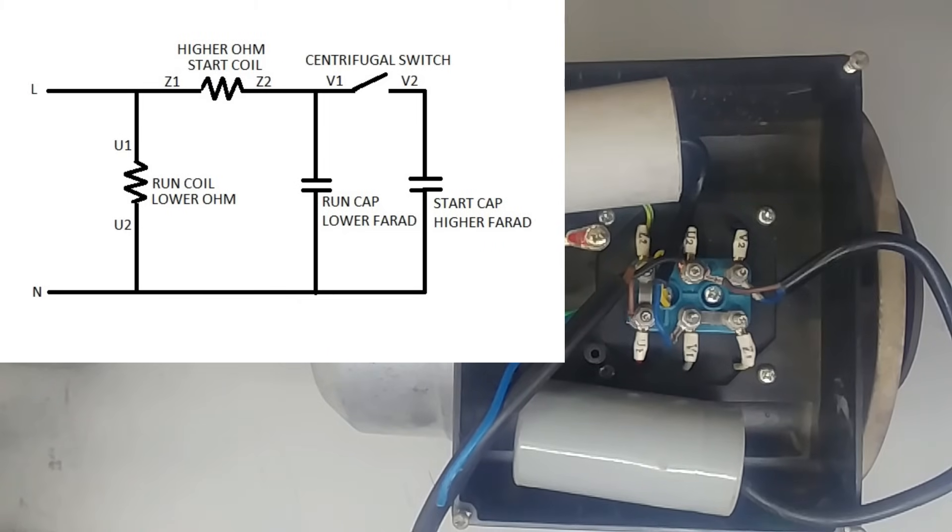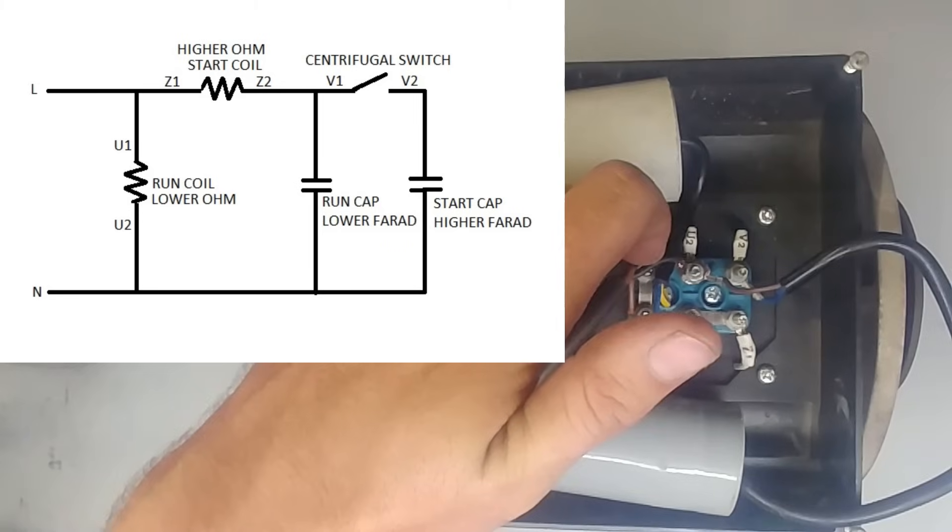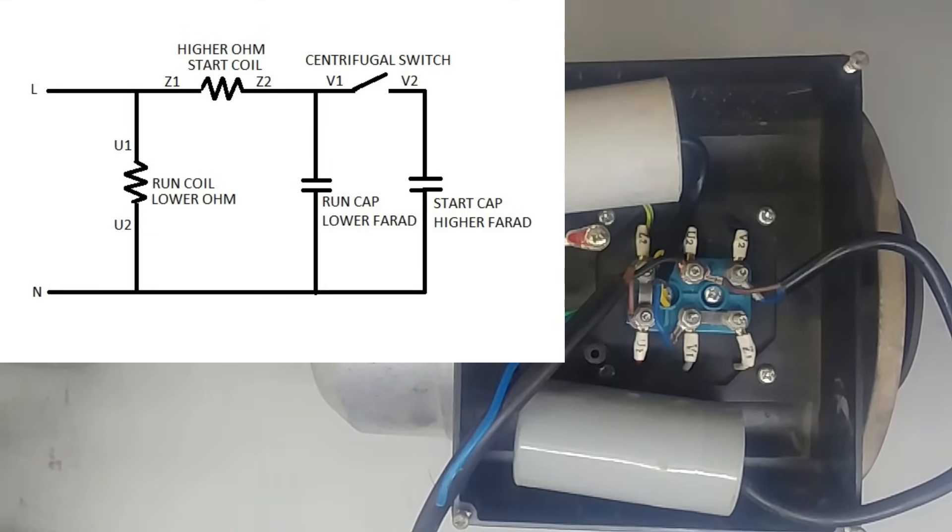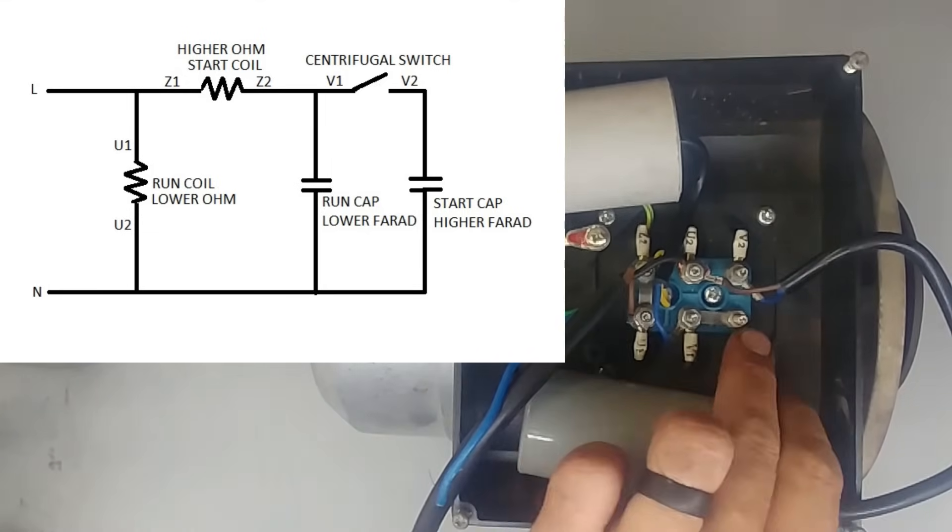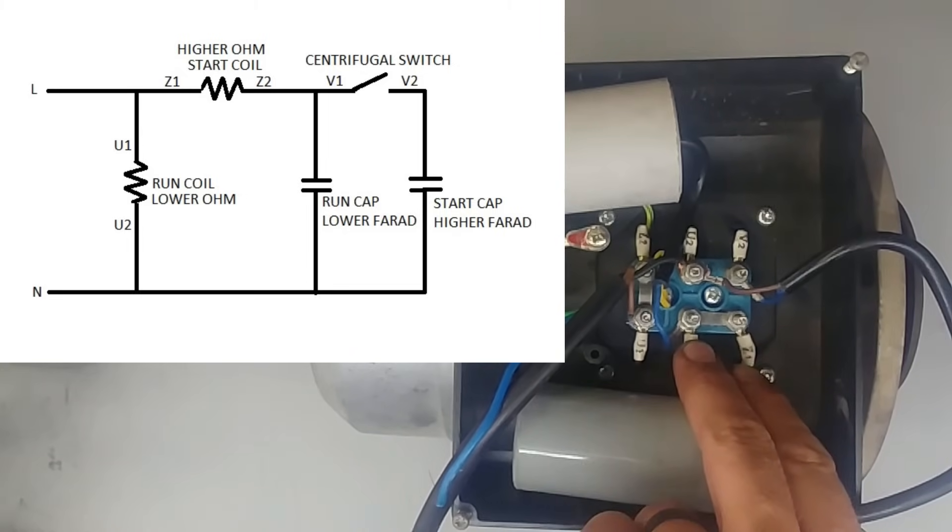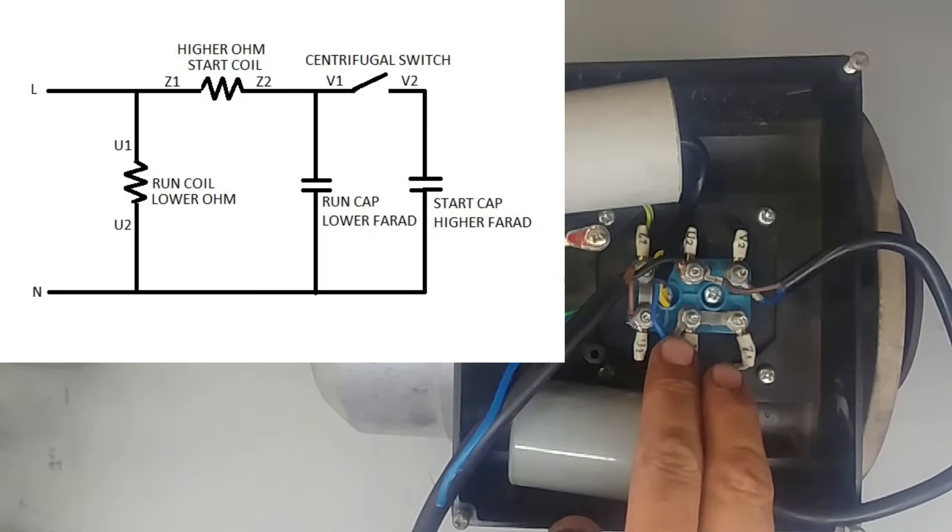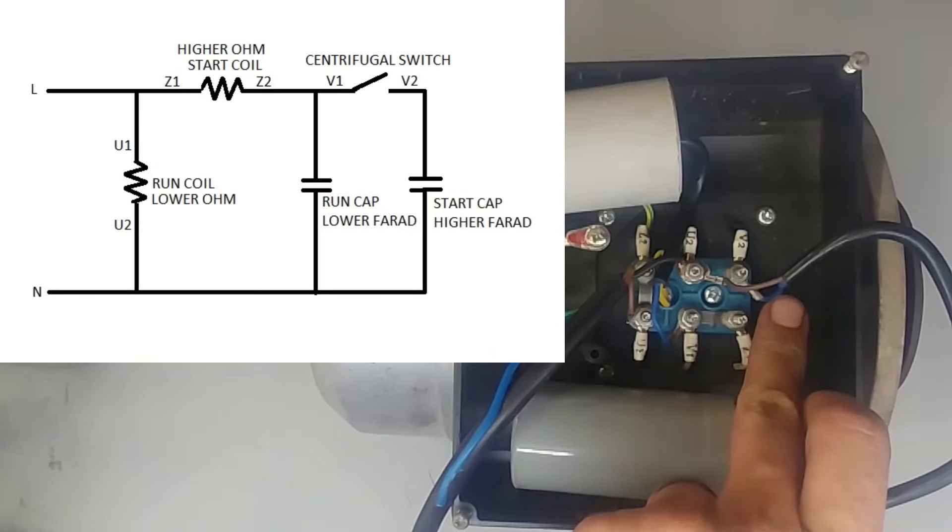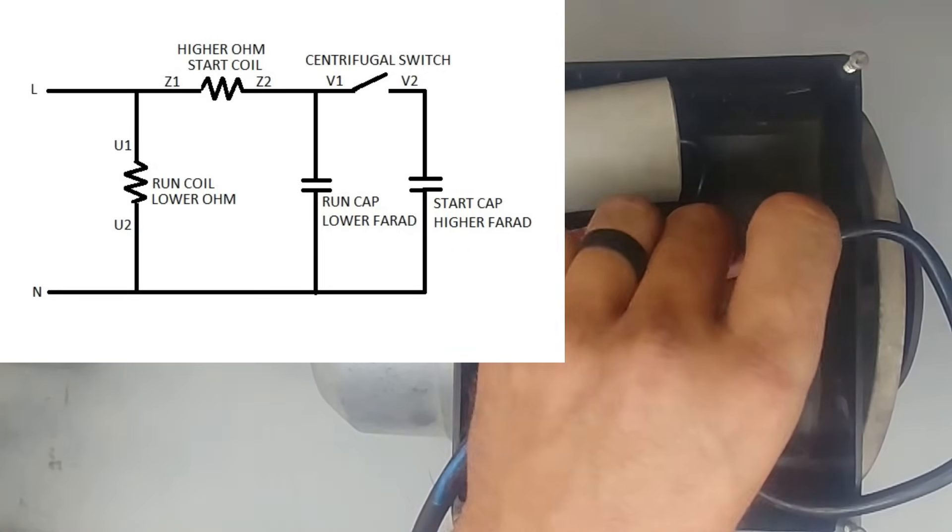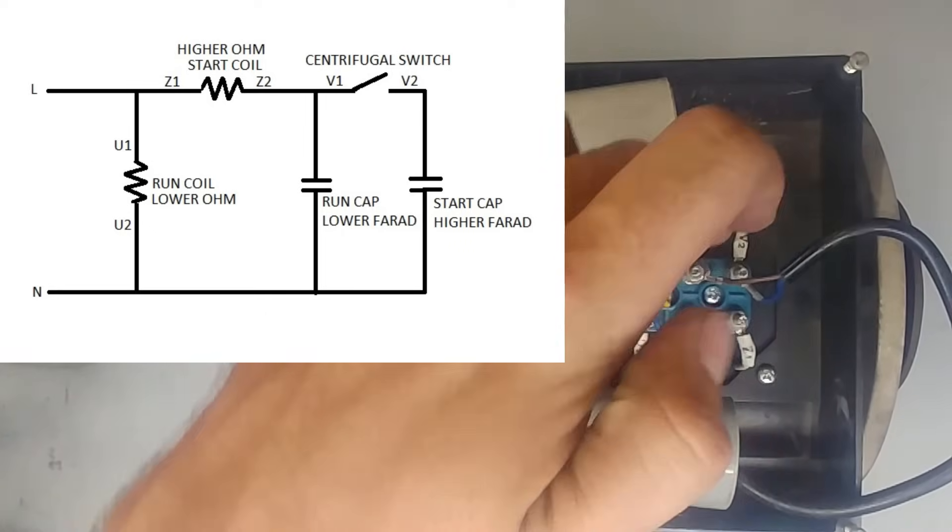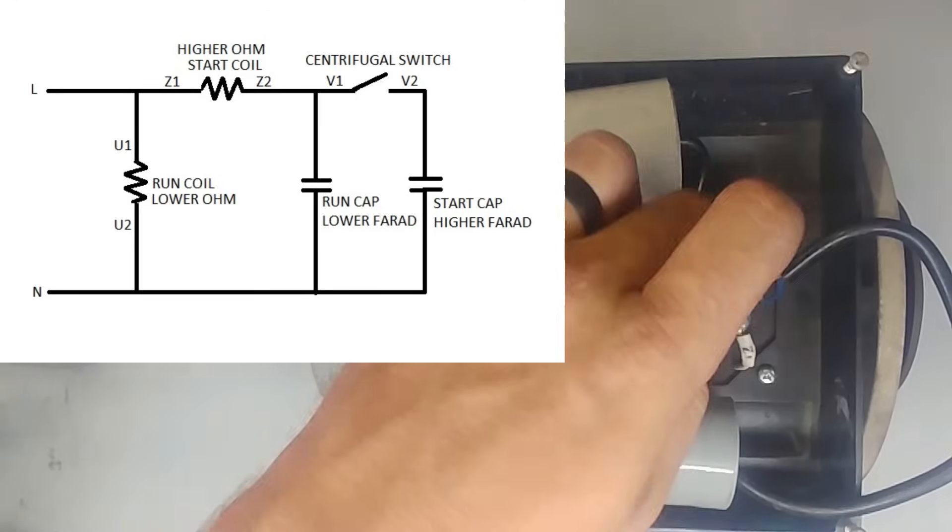Live, start coil, run coil connected. So the one side of the Z coil and the U coil is connected to the live. The other side of my start coil, the Z, is connected to the switch which is the V, the centrifugal switch as well as a capacitor, the run capacitor. And then the other side of the centrifugal switch is just connected to the starting capacitor at one point. And the other side of the capacitor, the start, the run and the run coil is connected to U and then neutral as well.